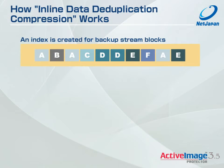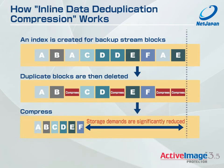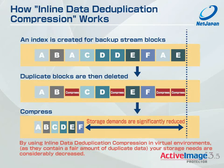This is how inline data deduplication compression works. During the backup, an index is created for backup stream blocks. Duplicate blocks are then deleted. The result is that storage demands are significantly reduced. By using inline data deduplication compression in virtual environments, as they contain a fair amount of duplicate data, your storage needs are considerably decreased.